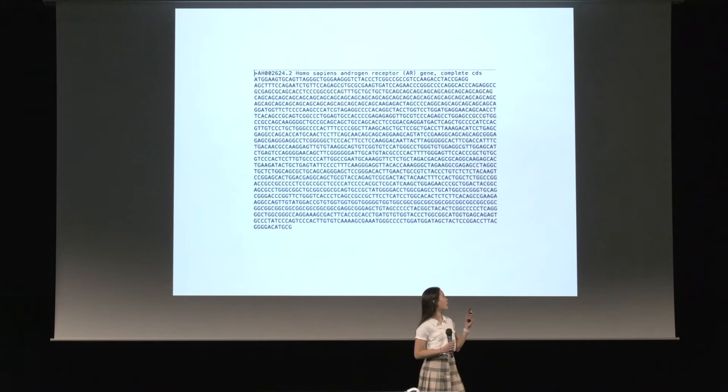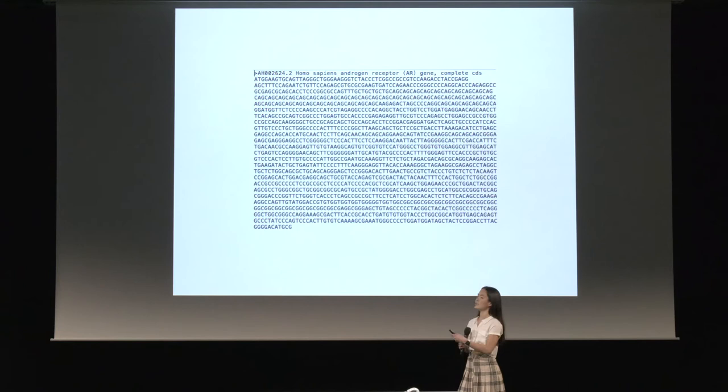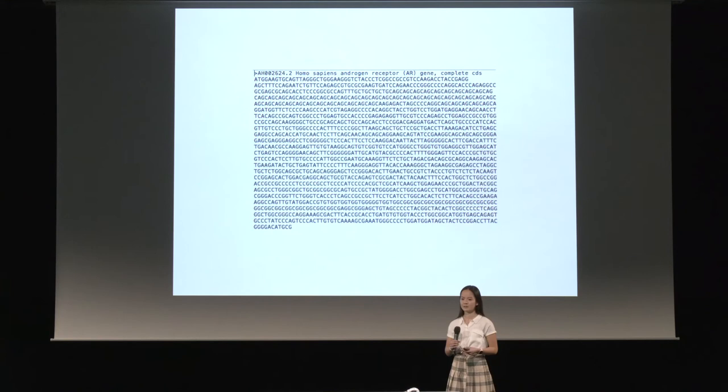Here's an example of a DNA sequence of a protein affected by a polyglutamine disease. Can you spot how many CAG repeats there are? Can you spot where the CAG bases are? It's really hard to do so because DNA is so long and there's so much information. And this is only a really short part of a DNA sequence. This is where DNA walks comes in.